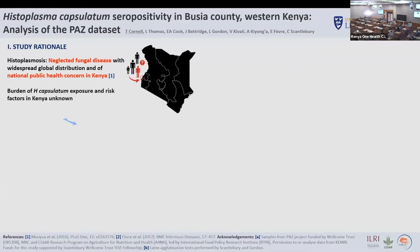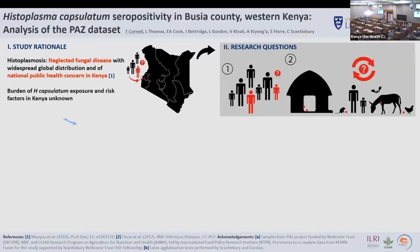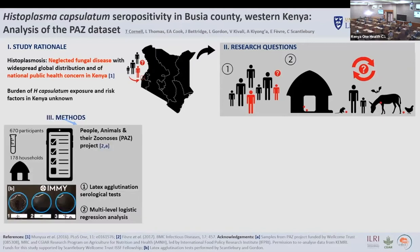How did we address the paucity of research? This study examines the human seroprevalence of anti-histoplasma antibody and associations between seropositivity and demographic and environmental variables in rural Boussia County, Western Kenya. Metadata and serum samples originated from a cross-sectional household survey previously conducted by the People, Animals and their Zoonoses project under an ILRI program.